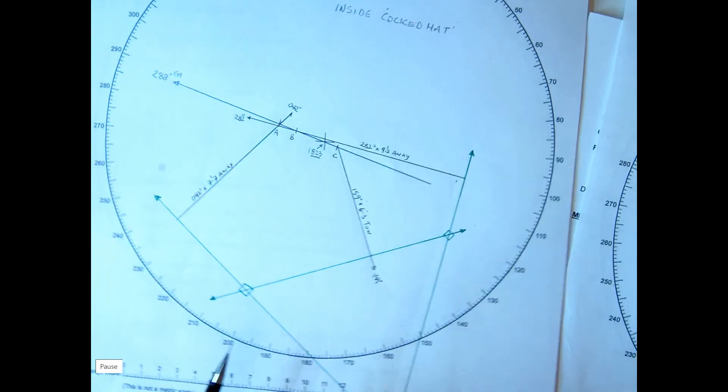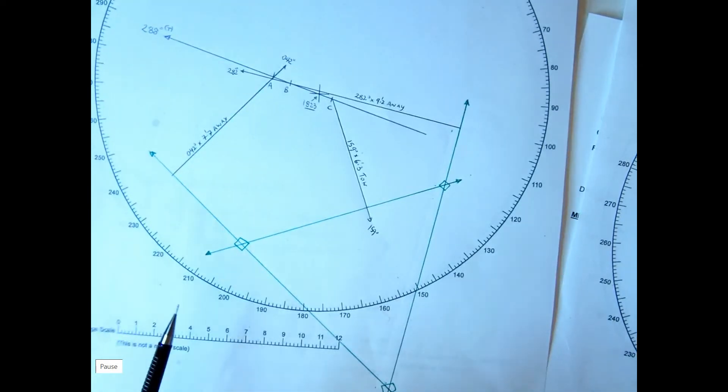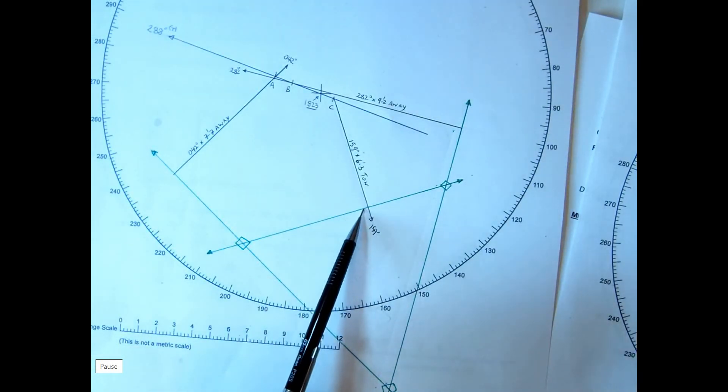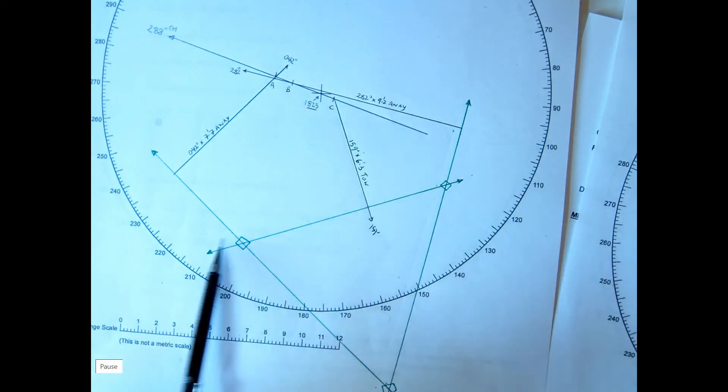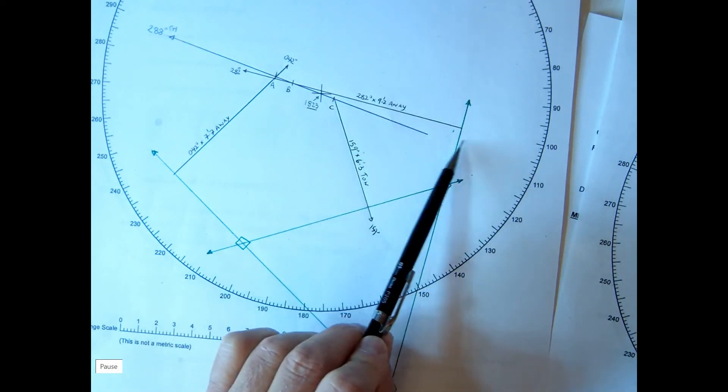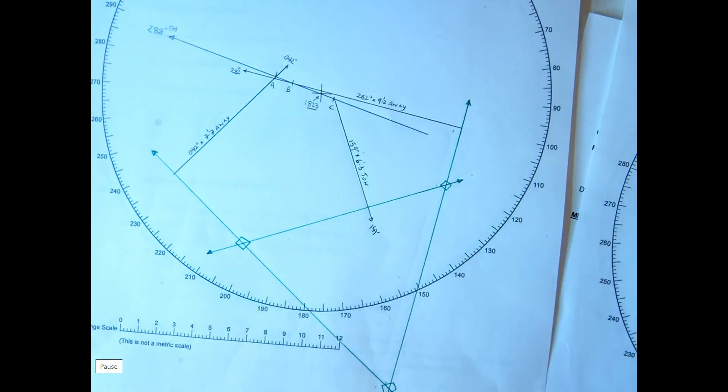So the large green triangle will be our cocked hat. Now this one's towards. So when we plot our second line, we'll do it towards that position. This one is away. So when we plot our second line, we'll plot it this side. And this one of course is away. So we'll have one line here, one here and one there.